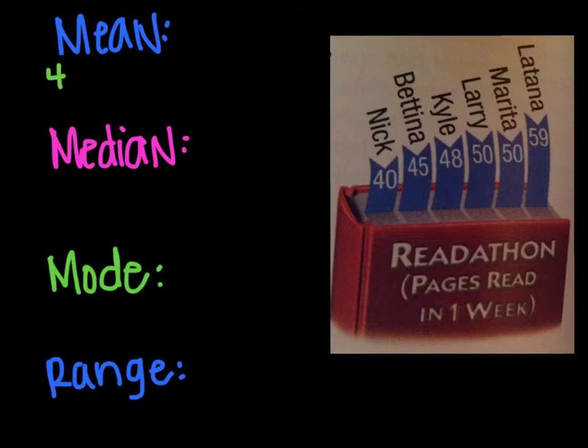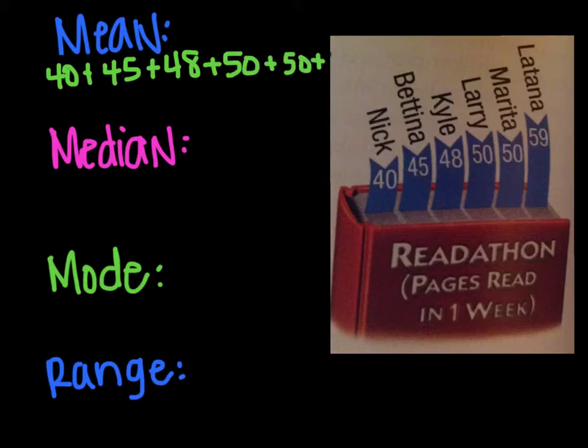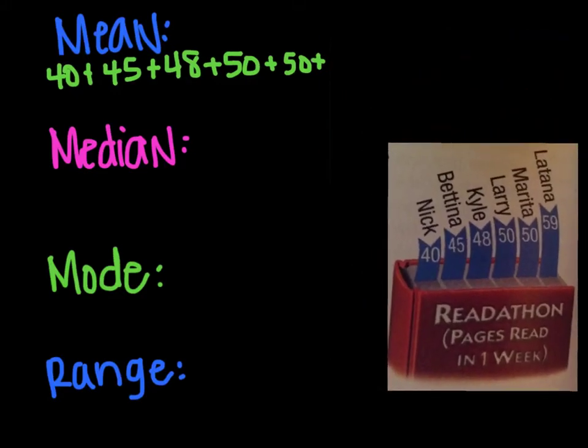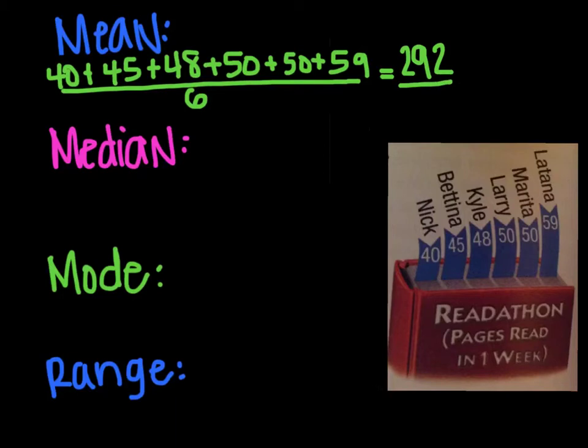So we have 40 plus 45 plus 48 plus 50 plus 50 plus 59. And then we're going to divide all of that by how many there are. And there are 1, 2, 3, 4, 5, 6 people. So we're dividing that by 6 because that's how many numbers we have. Equals 292, that was the sum of all those numbers, divided by 6. And when I do that, I get an answer of 48.6 repeating, which is basically saying there's about 48 and two-thirds pages read.